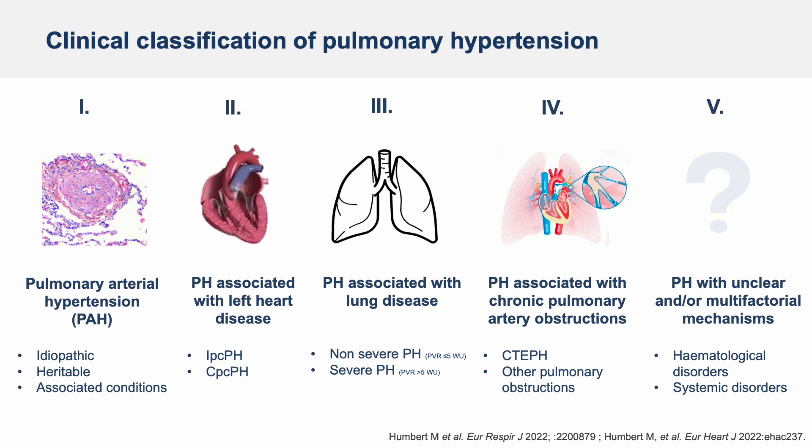It is important to understand that not all pulmonary hypertension is the same. PH is a general term to describe high blood pressure in pulmonary arteries from any cause. Patients will be classified into one of five groups of PH according to the clinical classification of pulmonary hypertension. The classification reflects the whole clinical context, and in each group, patients share similar pathophysiological mechanisms, clinical presentation, hemodynamic characteristics, and therapeutic management.